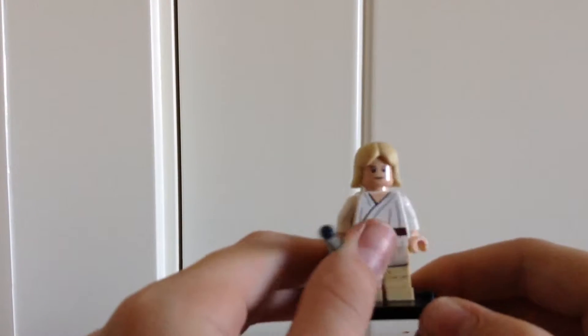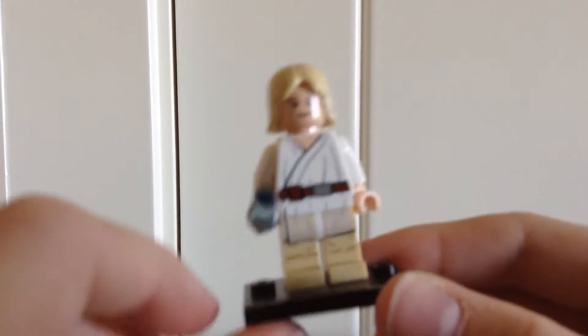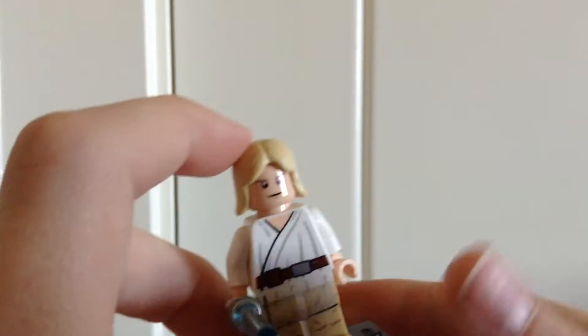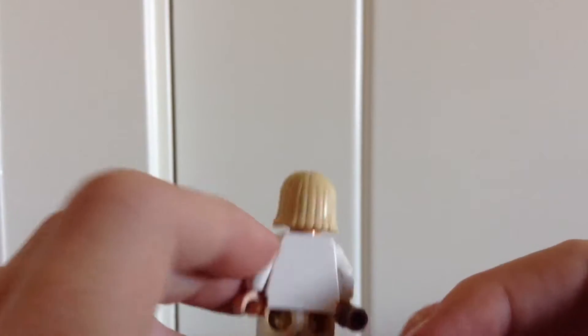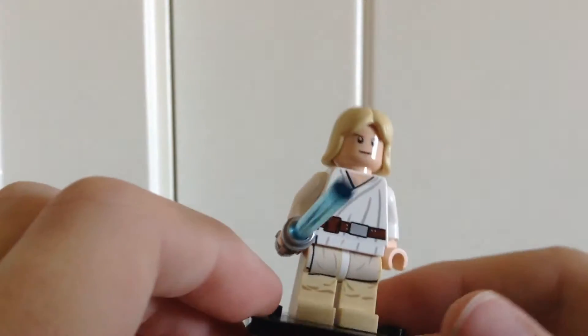Starting off first, here we have Luke. He has his original blue lightsaber. He also has leg printing as well. And he has the original hair piece and he doesn't have a second face or any back printing. So, a pretty plain minifigure. But that's it for Luke.